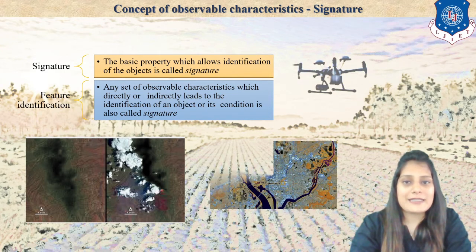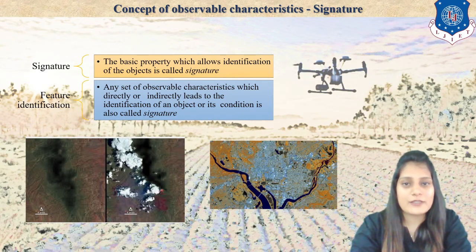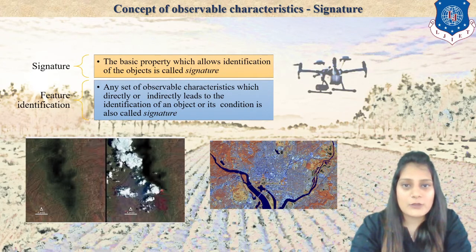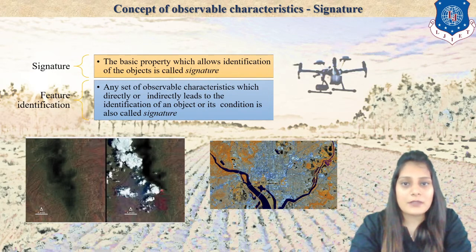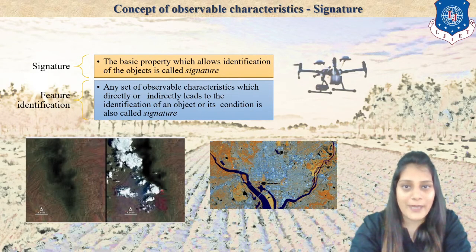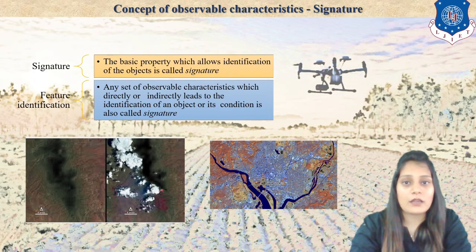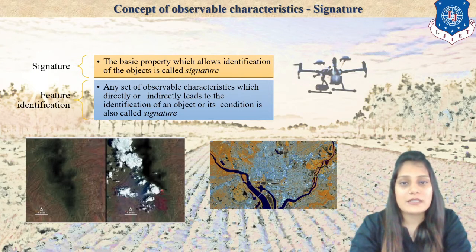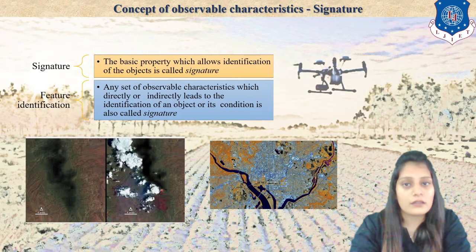Now look at this image carefully — there are various features visible. If there is an urban area or a construction patch, you can make it out with your eyes: light blue color indicates a construction patch. Black color is seen where there is water, so if something contains water it always shows as black color in satellite imagery.